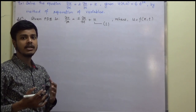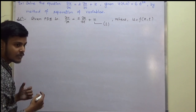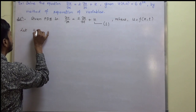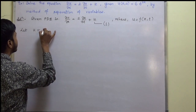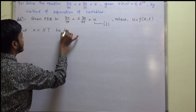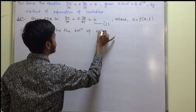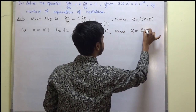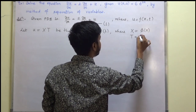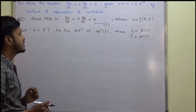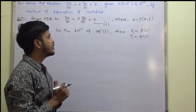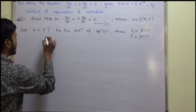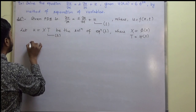In the second step we go for the solution. Let u(x, t) be the solution of equation 1, where X is a function of x only and T is a function of t only, so u = X·T. We need to find del u by del x and del u by del t from this and substitute into equation 1.